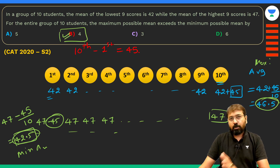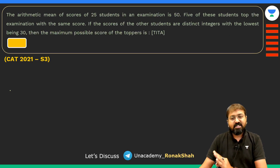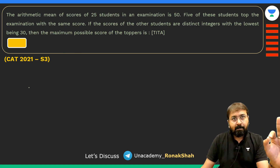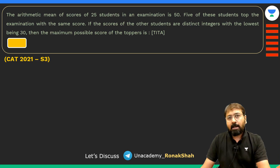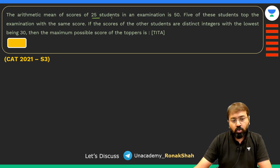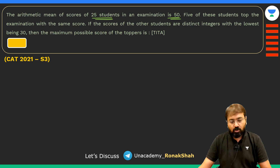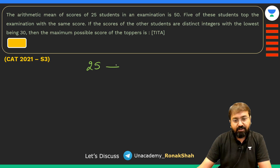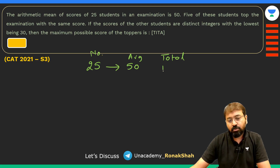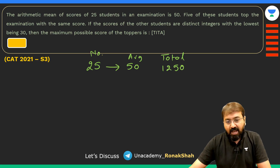Now let's look at another question: find the maximum possible score of the topper given the data. The arithmetic mean of the scores of 25 students in an examination is 50. Total marks = 25×50 = 1250. Five students topped the examination with the same score X, so their combined marks = 5X.